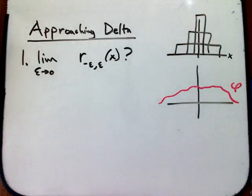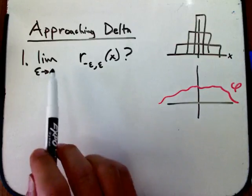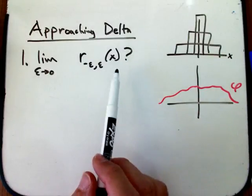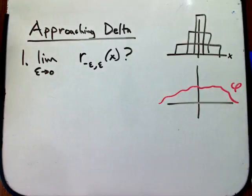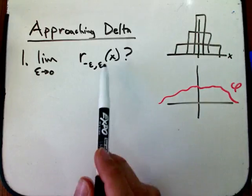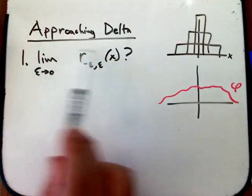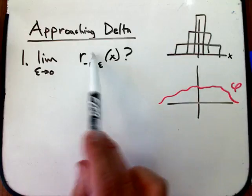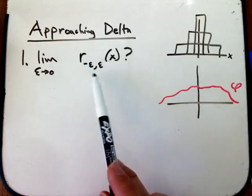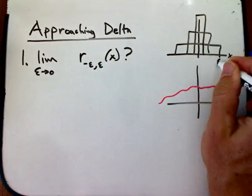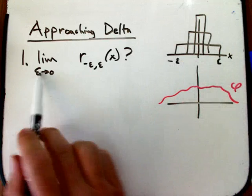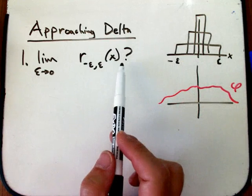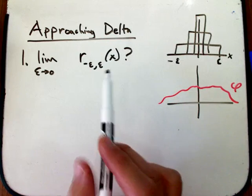Let's look at approaching delta from the perspective of trying to define it as a distribution. The introductory point here is a microcosm of the whole point for distributions. If I try to take this limit, the limit of these rectangle functions—these are normalized rectangle functions of area 1 with width from minus epsilon to epsilon—if I try to take that as a pointwise limit, it's not going to make a lot of sense, it's not going to be useful.